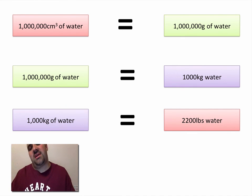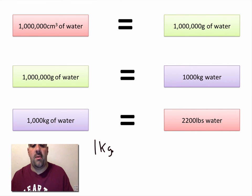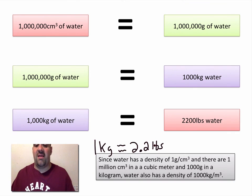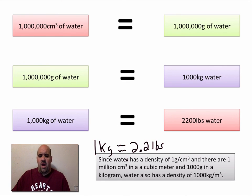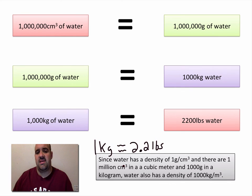And 1,000 kilograms of water will, in fact, weigh 2,200 pounds, because 1 kilogram is roughly 2.2 pounds. So a cubic meter of water actually has a lot of weight — it is very, very heavy. You could not lift it. Not even close. Since water has a density of 1 gram per centimeter cubed, and there are 1,000,000 centimeters cubed in a cubic meter, and 1,000 grams in a kilogram, water also has a density of 1,000 kilograms per meter cubed. Hopefully that helps you out in converting the two different units for density and answering the question of how many centimeters cubed there are in a meter cubed.